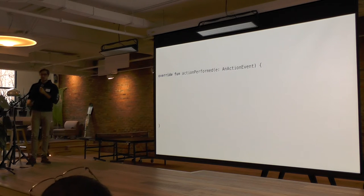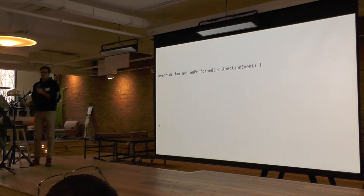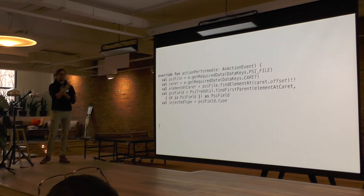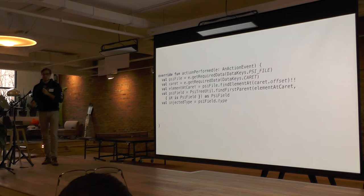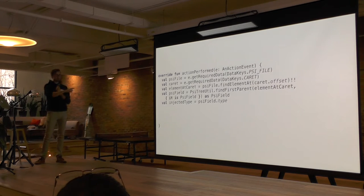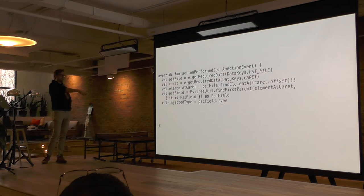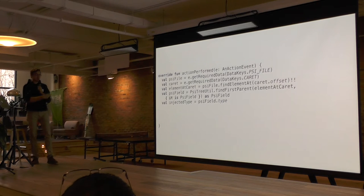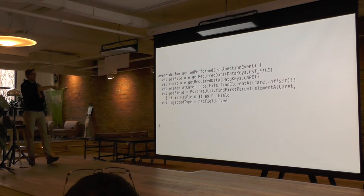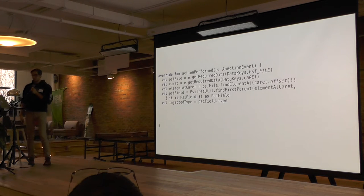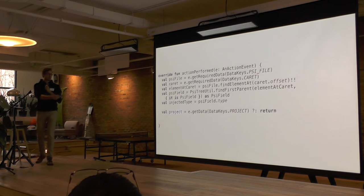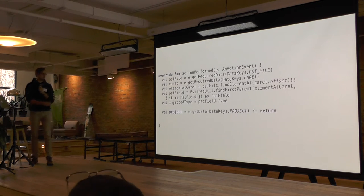That's update. The next part is implementing action performed. Typically the first few lines look exactly the same as update, except now you use getRequiredData instead of getData because you've already verified the data exists — guaranteed non-null. Instead of checking for the @Inject annotation, here I just want the type of the PSI field. So if we're clicking on a field of type SomeClass, the injectedType is SomeClass, and that's what we'll search for in our providers. We also get a reference to the project using getData, because managers require a project.